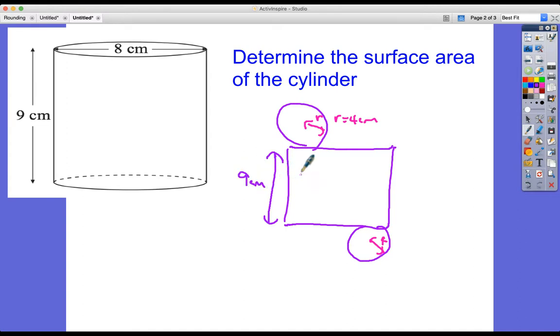We've got everything we need to find the areas of the two circles, because we know that's just πr². So let's make a start, and then we'll think about the other bits.